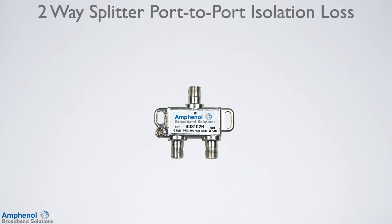With MOCA, the other loss path we need to take into account is the port-to-port isolation path. Since MOCA is an in-home network, the MOCA signals need to travel between output ports of the splitter. The port-to-port isolation for a two-way splitter is typically around 25 dB. In the loss budget calculation section, I'll be using these losses of each individual device in our examples.